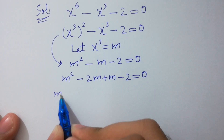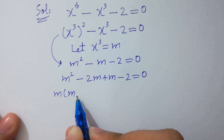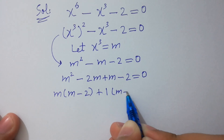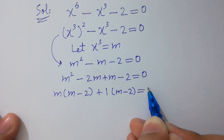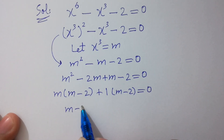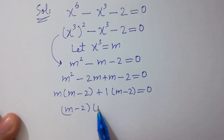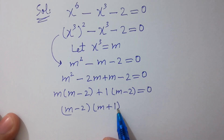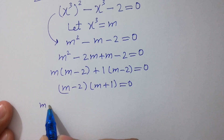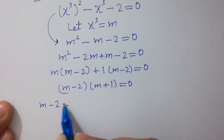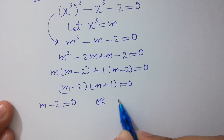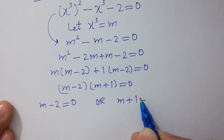Factoring by grouping: m times (m minus 2) plus 1 times (m minus 2) equal to 0. Since (m minus 2) is common, we get (m minus 2)(m plus 1) equal to 0. So either m minus 2 equal to 0 or m plus 1 equal to 0.